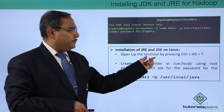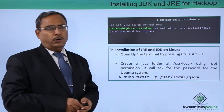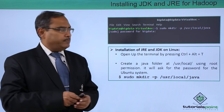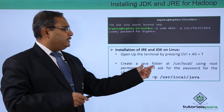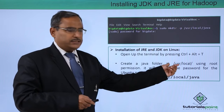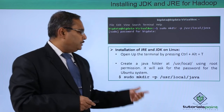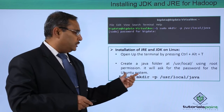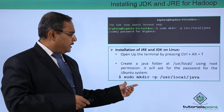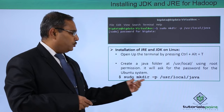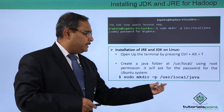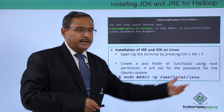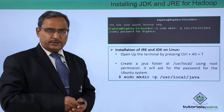Open up the terminal by pressing Ctrl+Alt+T. In Ubuntu, just press Ctrl+Alt+T and the terminal will open. Create a Java folder at /usr/local using root permission. It will ask for the Ubuntu root system password. The command will be: sudo mkdir -p /usr/local/java. This folder is to be created.